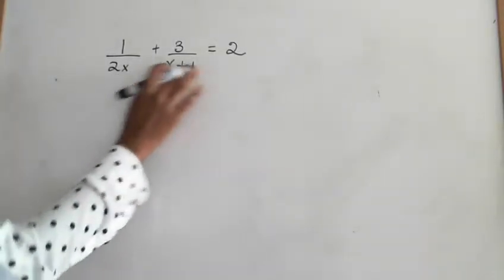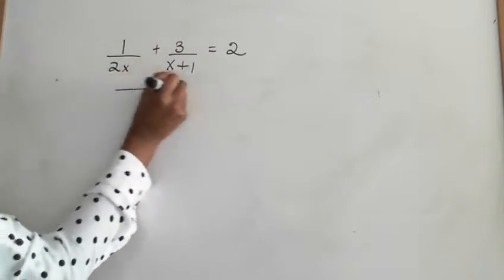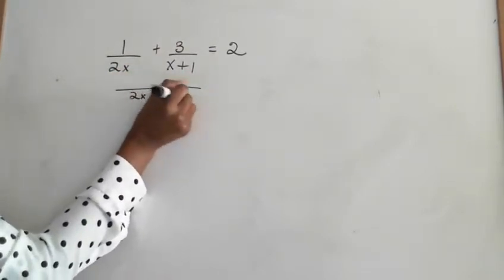Okay, let's find x. Well, we're adding, so we need to give them a common denominator. It'll be 2x times x plus 1.